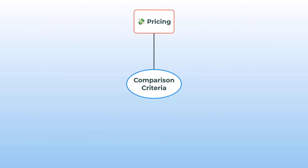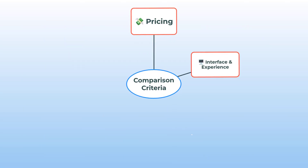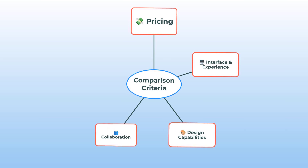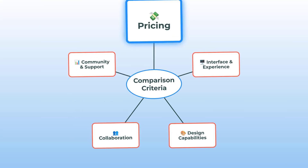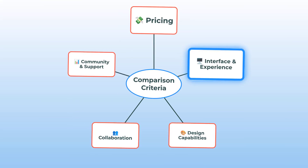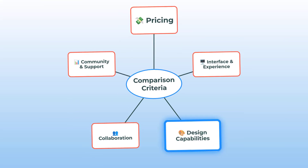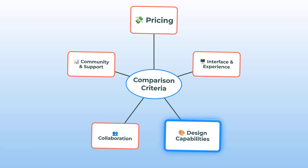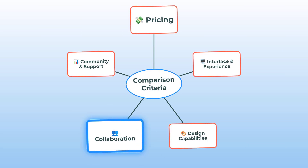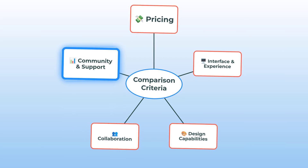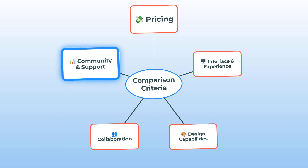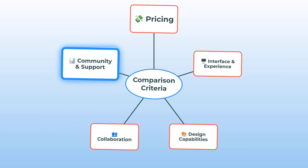The result might just surprise you. We've got a mind map of all the categories we're breaking down today. We'll start with pricing, then interface and experience, design capabilities, collaboration, and finally community and support. Grab a snack, because we're going all in.